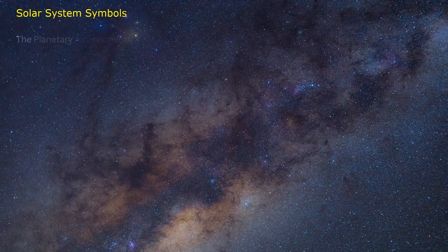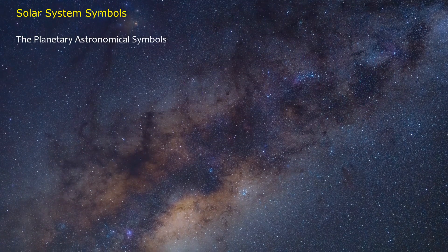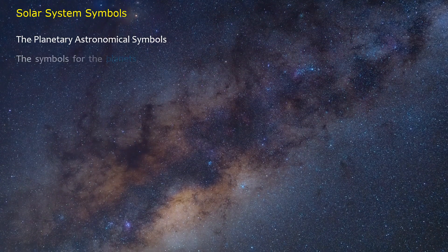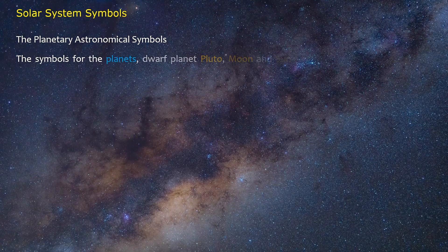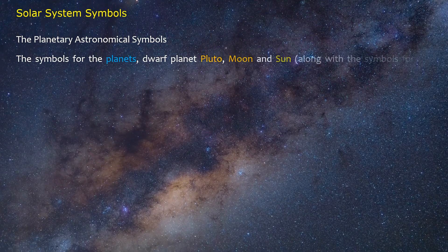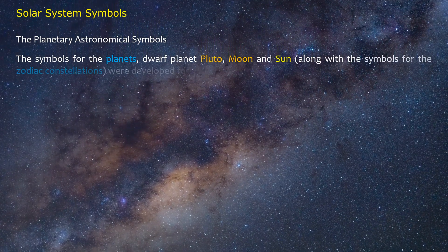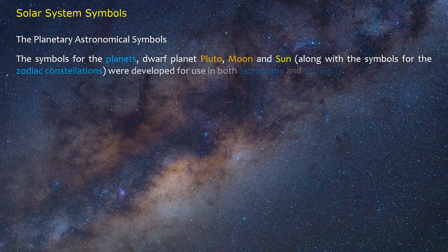Solar System Symbols: The planetary astronomical symbols. The symbols for the planets, dwarf planet Pluto, Moon and Sun, along with the symbols for the zodiac constellations, were developed for use in both astronomy and astrology.